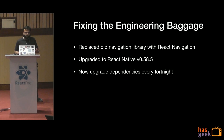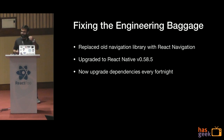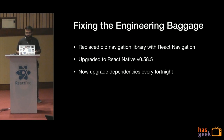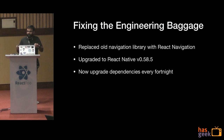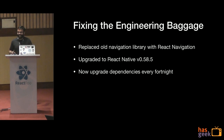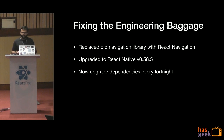We ended up replacing the old navigation library with React Navigation. Now scroll position is saved because React Navigation works on a stack. After getting rid of most of this engineering baggage, we spent some time to upgrade our stack. I'm happy to say we are on the latest version of React Native — 0.58.5 (the latest is 0.58.6 as per what I read). After making our package.json as lean as ever, it has become much easier to upgrade our dependencies fortnightly.